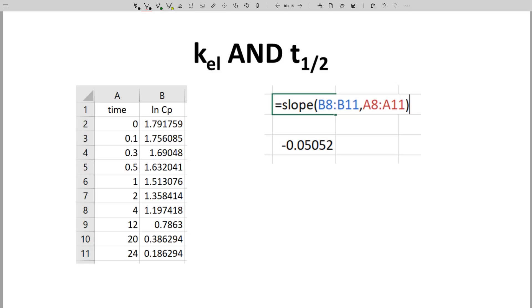We now have our raw data points as natural log CP and time. Again, these are the natural log values. In a spreadsheet, we can select the data points that are in the linear elimination phase.